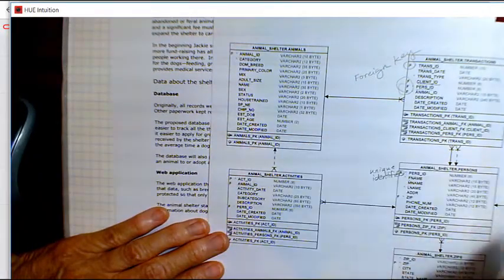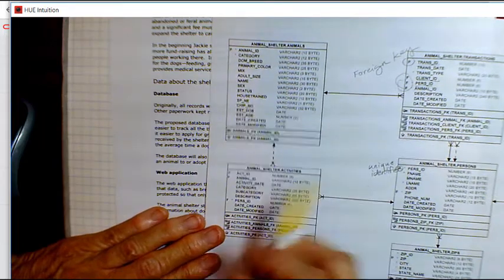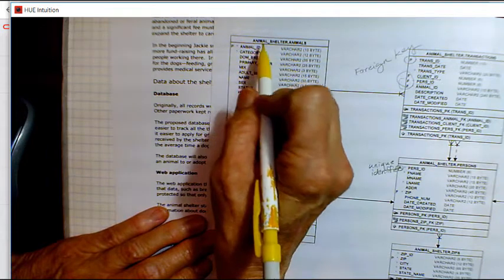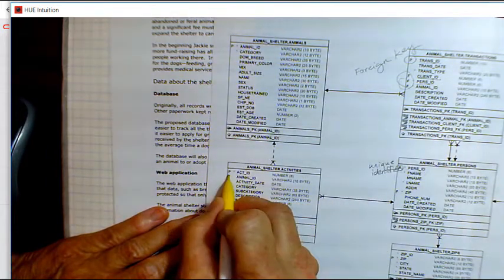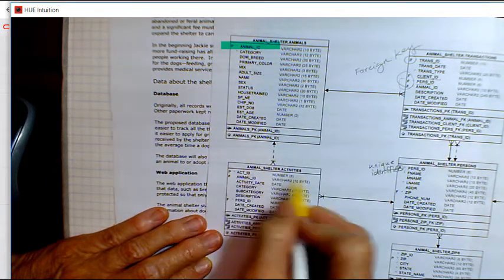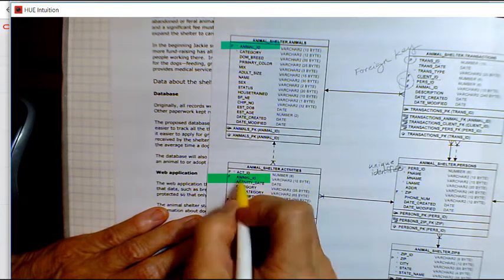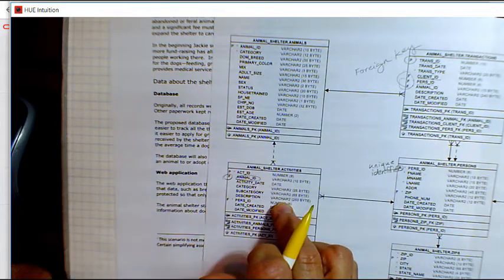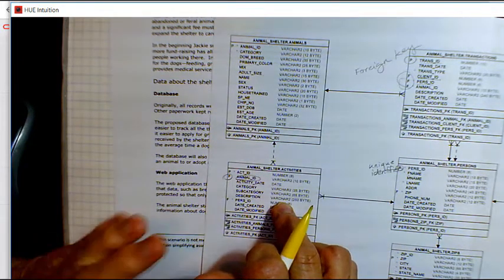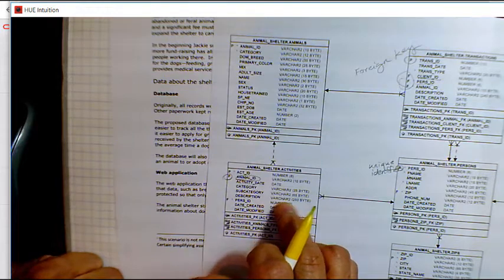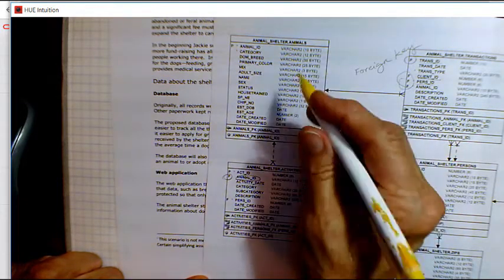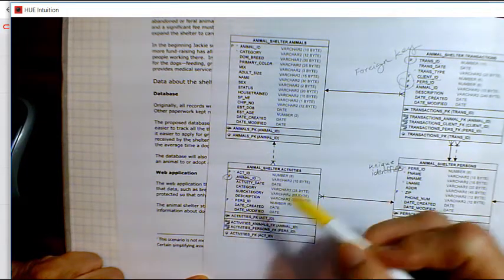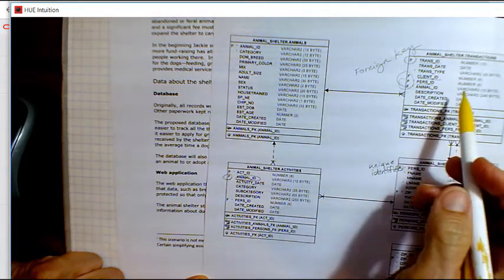We have activities that are linked to an animal. Animal ID is the primary key, and activity ID is the primary key in this table. But animal ID here allows us to link this activity—vaccination, surgery, training—to a specific animal.